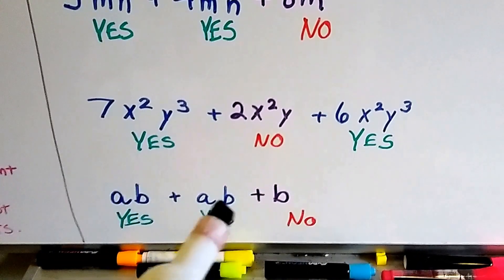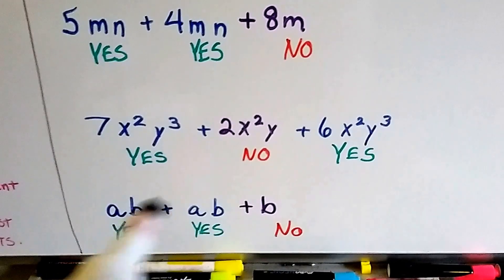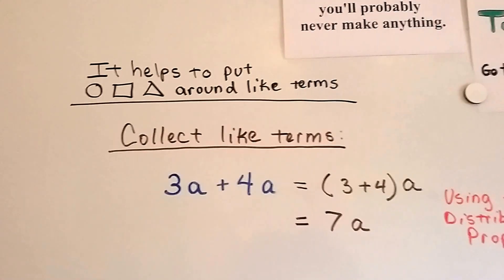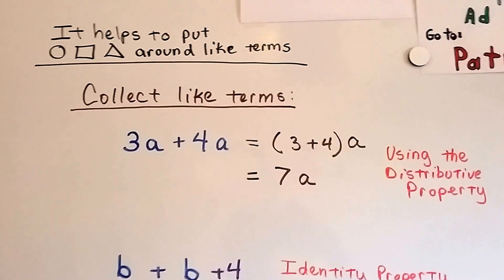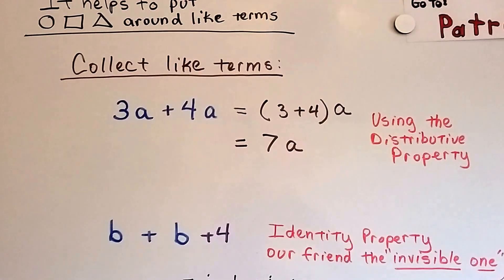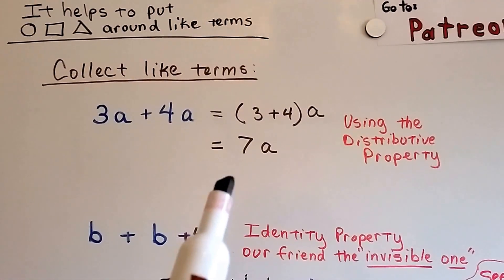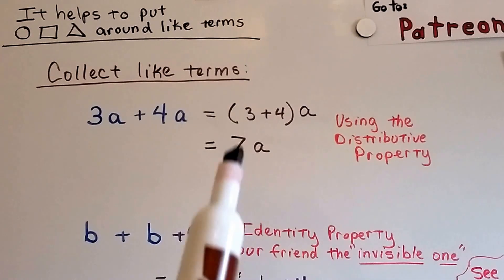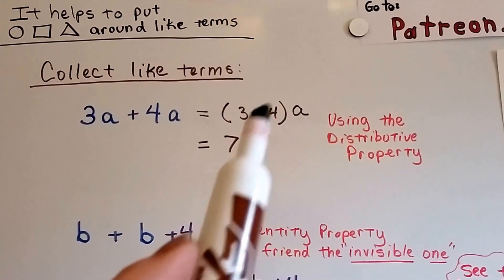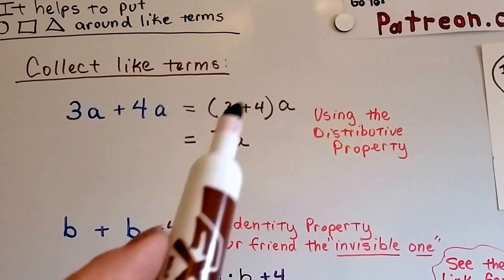We've got a·b plus a·b plus b. These two are alike — they're identical — but this b isn't. So we would combine the two like terms and put the plus b at the end of the expression. It helps to put circles, squares, or triangles around like terms when you're first learning, because it helps you identify them. So we're going to collect like terms: 3a plus 4a. This is an easy one because there are only two terms and they are alike. We combine them using distributive property — we've got a 3 and a 4 in parentheses with an a on the outside. That gives us 7a: 3 plus 4, and then we have the a.